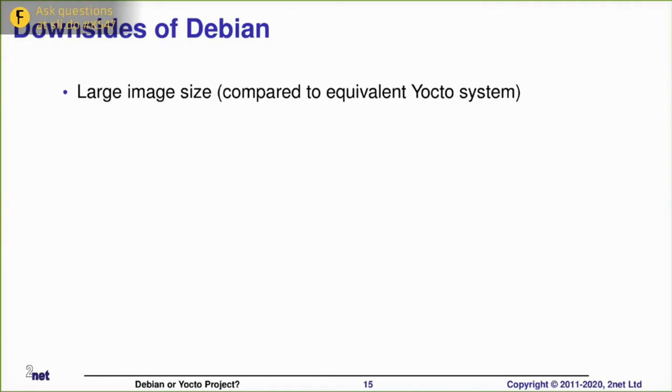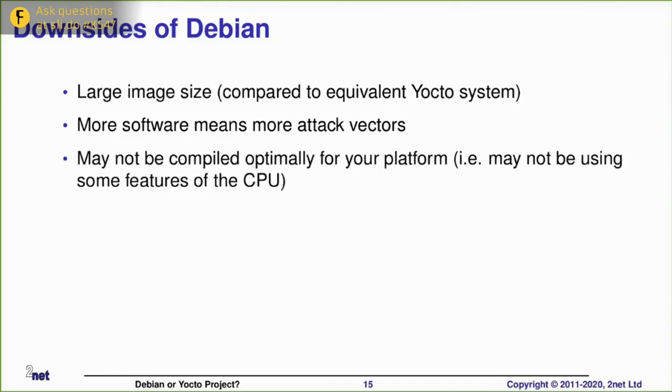So what else is wrong with the Debian approach? It does tend to build larger images than if you do the same thing with Yocto. That's because the Debian images are meant to be generic and to work on a wide range of systems. And so inevitably they have stuff that's common to a large number of their use cases, but which may not be needed in your particular use case. And that means more software means more attack vectors. It means there's more software to protect. There's more things that can go wrong.